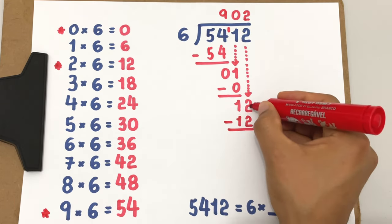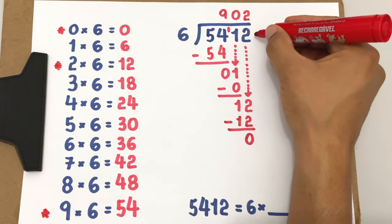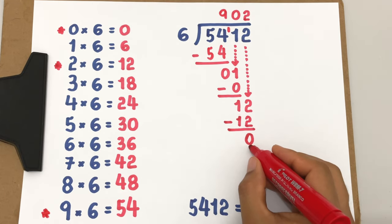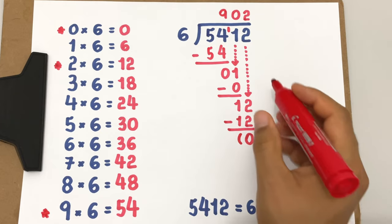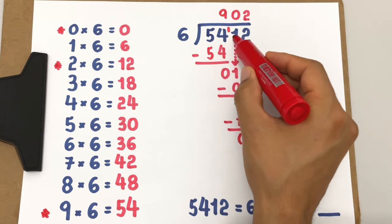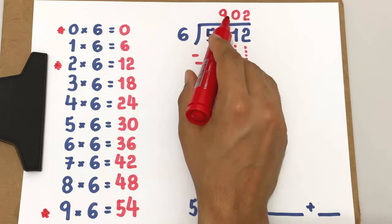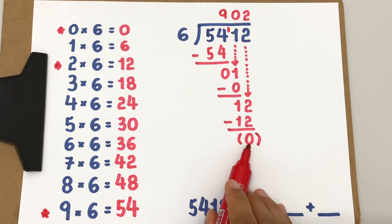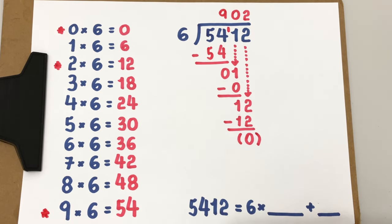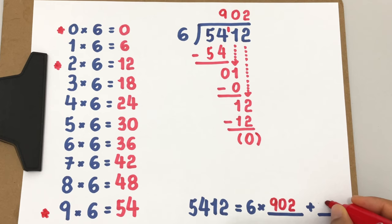And then we subtract 12 minus 12 equals 0. Since there are no visible digits to bring down, since we have nothing here, so this is it, and we can say now that 5412 divided in 6 equal parts, each of these parts are equal to 902, and there is nothing left over. So the quotient, the result of this division is 902, and the remainder is 0.